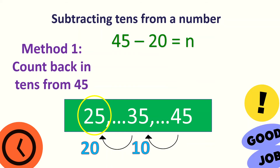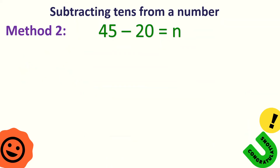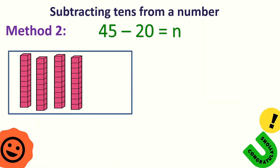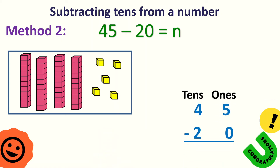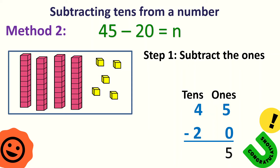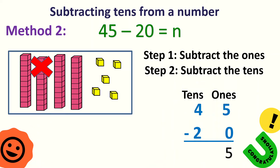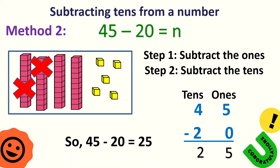Now, let's apply the second method using the base 10 blocks. 45 is 4 tens and 5 ones. Let's write it in vertical form. Subtract the ones first — 5 minus 0 is still 5. Then the second step, subtract the tens: 4 minus 2 — take away 2 tens: 1 ten, 2 tens. How many left? 2. So, the answer is 25.